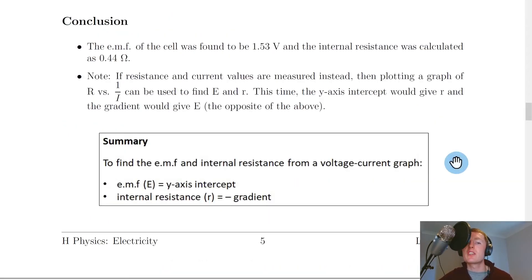So as a conclusion for this experiment we can say that emf of the cell was found to be 1.53 volts and the internal resistance was calculated as 0.44 ohms. It then says to note that if resistance and current values are measured instead then plotting a graph of r versus 1 over i can be used to find e and r as well. This time the y-axis intercept though would give r and the gradient would give e, the opposite of the above.